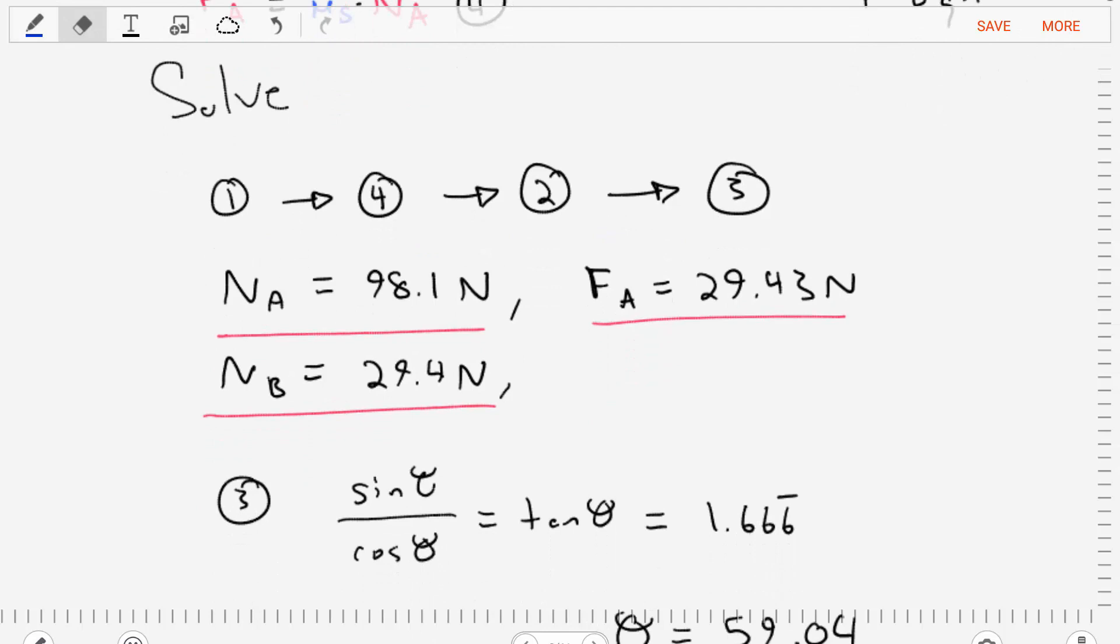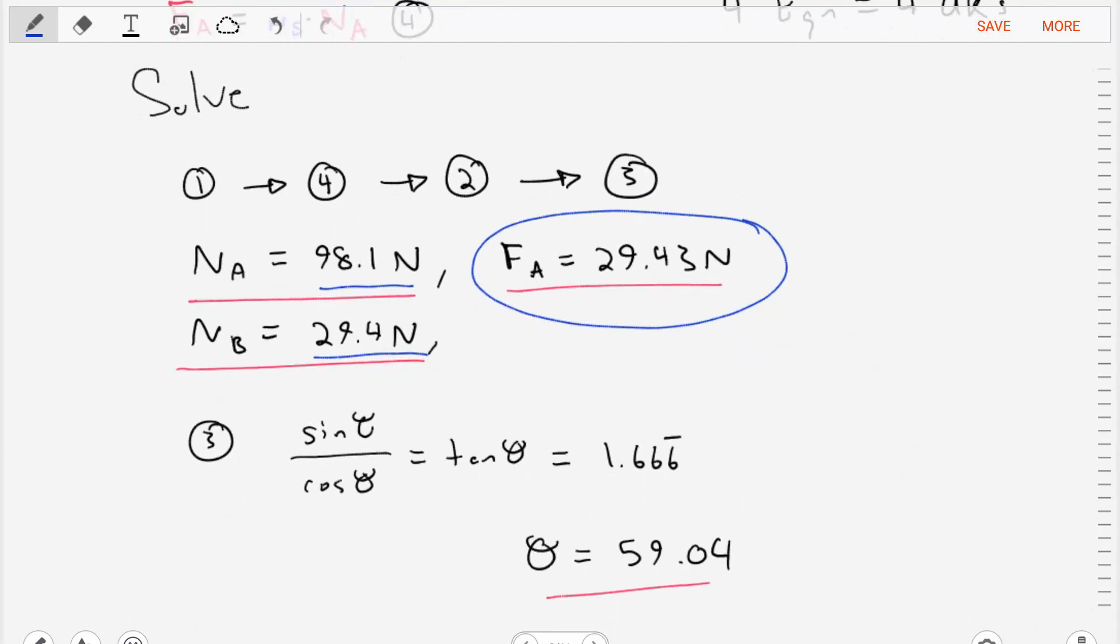We'll find that the normal force at A is equal to 98.1 Newtons. The normal force at B is equal to 29.4 Newtons. And the frictional force at A is 29.43 Newtons. That's pretty good.